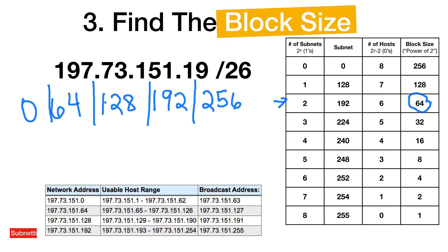So the ranges would be: zero — this is the first one — 64, 128, which would be this one — these are the network addresses — and the next one would be 192. This is how you use the block size to figure out which subnet you're in, and then you can find the first, the last, and all of that.